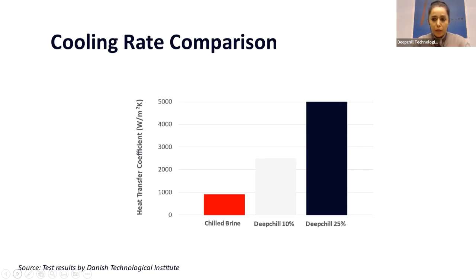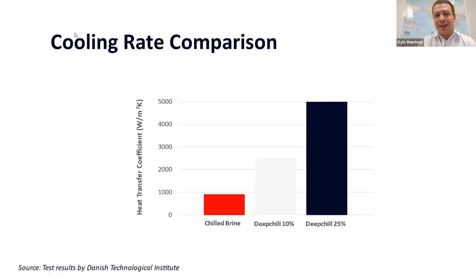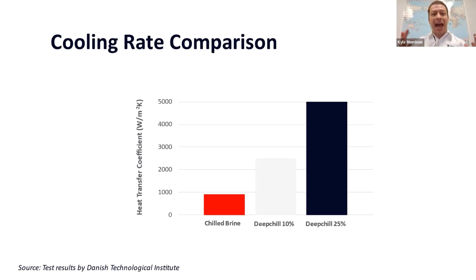Over the next 15 to 20 minutes, Kyle is going to tell you how Deep Chill can be applied in your operation and how it will impact product yield. If you're comparing a liter of chilled water to a liter of Deep Chill, Deep Chill is going to have five, six, seven times more latent energy in that liter — which is why we cool a heck of a lot faster than water.